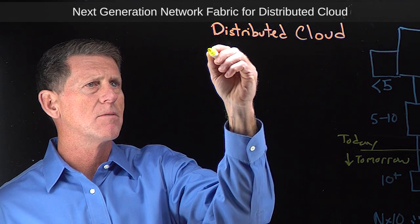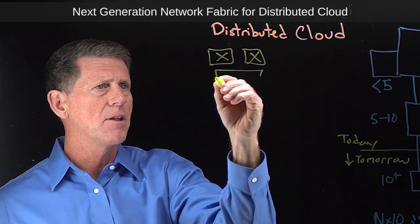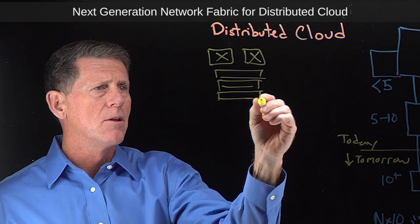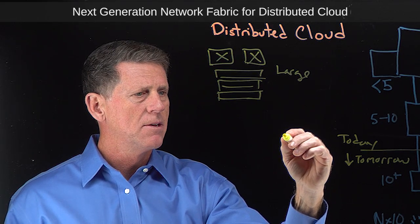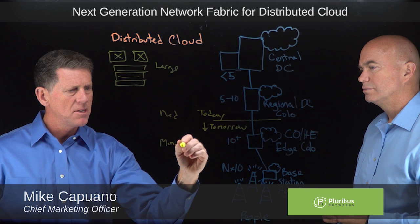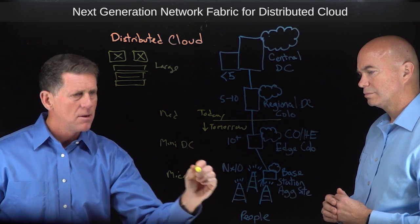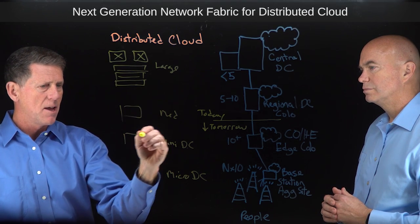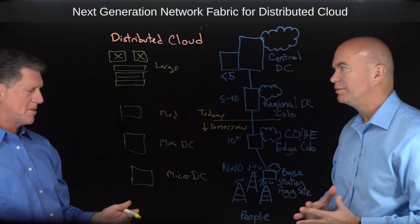Fundamentally, what you've got is — pretend these are two top-of-rack switches with a bunch of servers and storage underneath. This large one is going to be obviously a large data center, this is going to be a medium one, this is going to be a mini DC, and if we get down here, it's going to be a micro DC. You're going to have this replicated in different sizes at all these locations — just fewer racks as you go down.